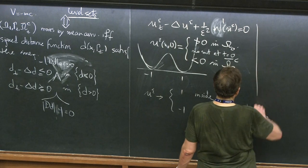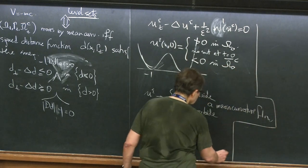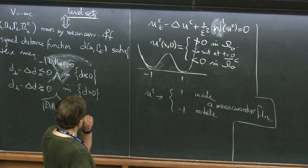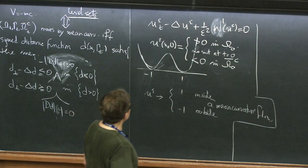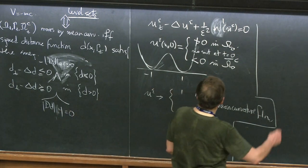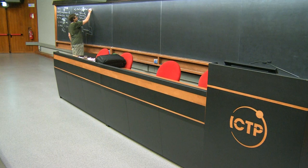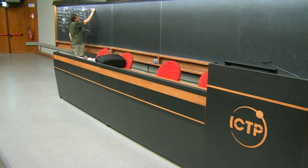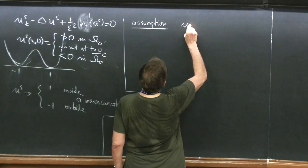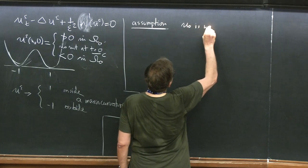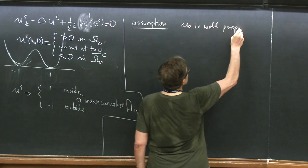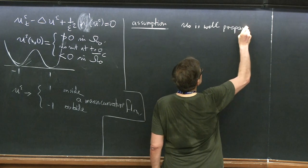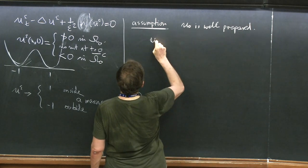There is a nice cute proof, but it's like magic. So I'm going to make the assumption — I have to make another assumption: U zero is well prepared. I know that this is a very illuminating assumption.